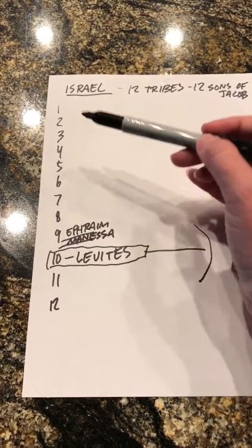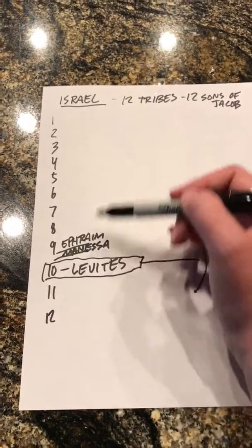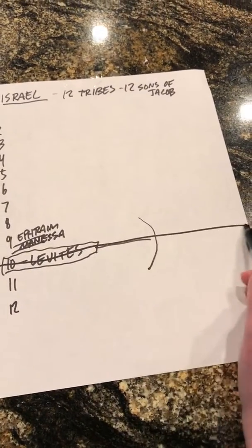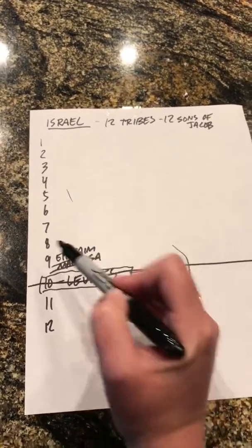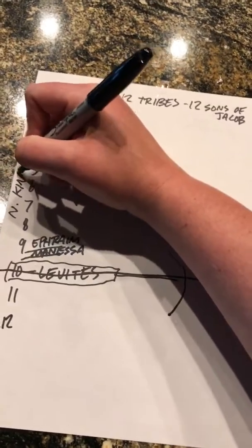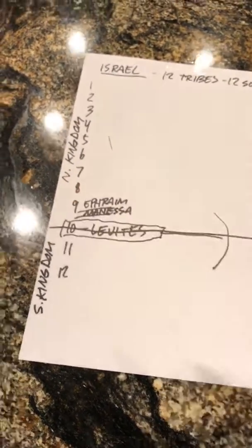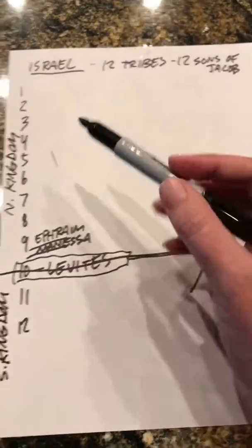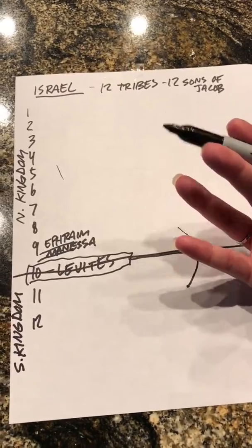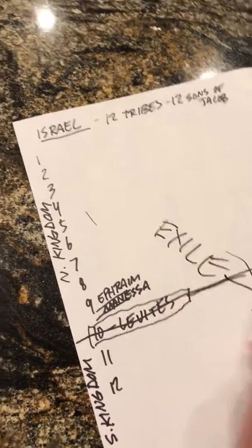All these tribes — each brother had a piece of land with his family and it became their tribe. They kind of got in a disagreement with each other, and what happened was they divided. Some of the Levites were in these tribes and some were in the others. This became the northern kingdom of Israel. Both kingdoms, because of their disobedience, were told through the prophets they would be exiled — and both went into exile.